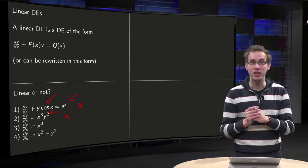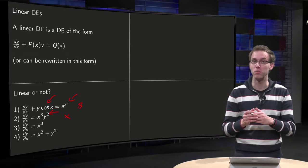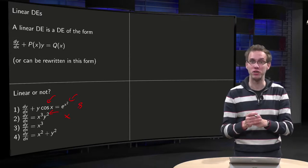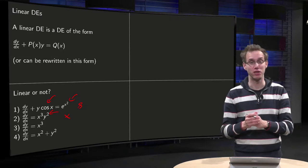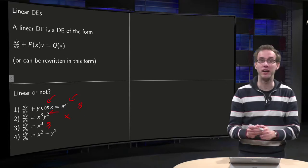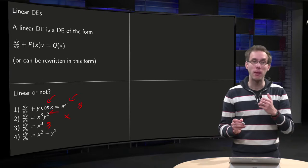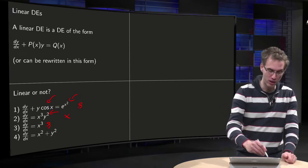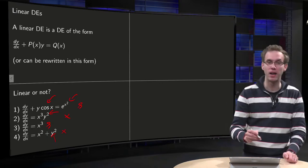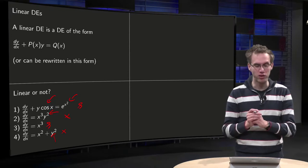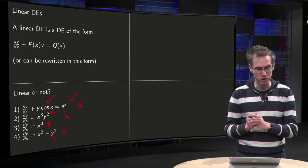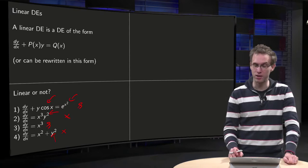Third one: y' divided by x equals x cubed. Is this one linear? It doesn't look so, because we are missing the p. But wait — p(x) can be anything, including the zero function. So here we have a linear differential equation with p(x) equals zero and q equals x cubed. This one is linear and separable as well. The last one: y' divided by x equals x squared plus y squared. Here we have again a y squared, so this one is not linear — and it's not separable either. So the first and the third are linear. The third is also separable. The fourth is neither linear nor separable.